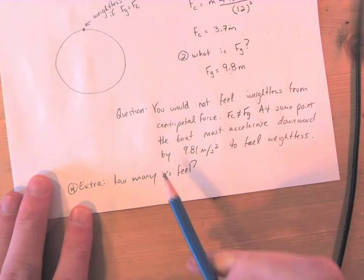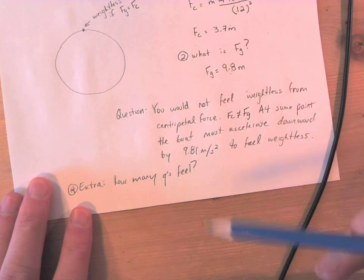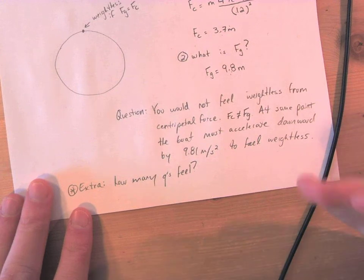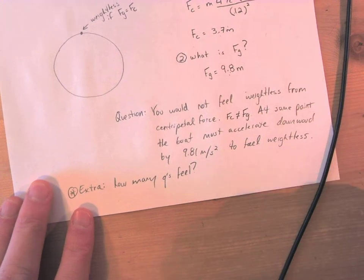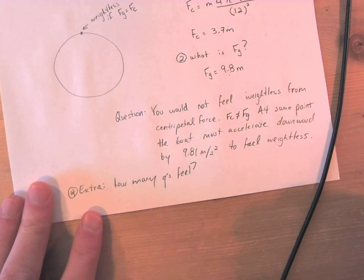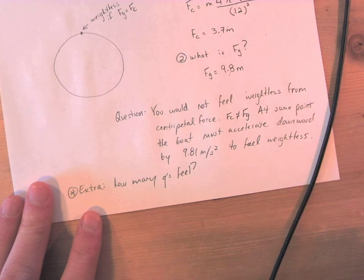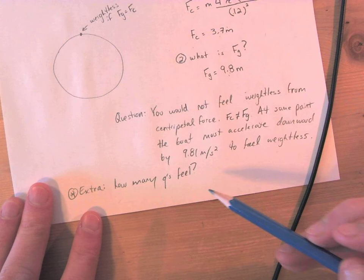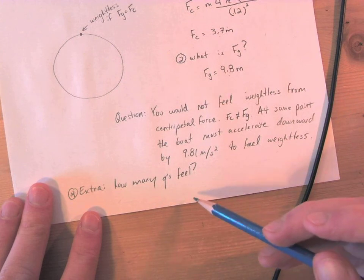So when I'm thinking of this, how many g's do you feel, that just means how many forces of gravities or how many multiple of those 9.81 would you feel. If you're not moving on earth you just feel one g, or you just have an acceleration of 9.81 meters per second squared.